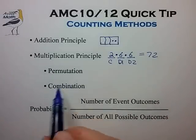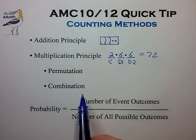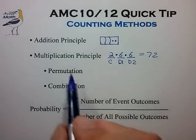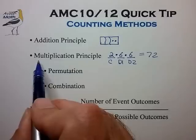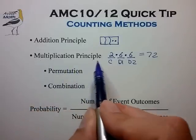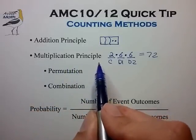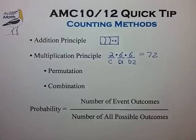The permutation and the combination are basically two specialized applications of the multiplication principle. They come up frequently in counting problems, so they get their own names.